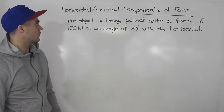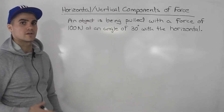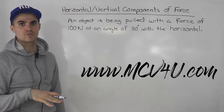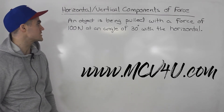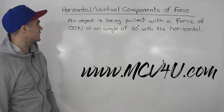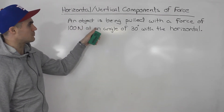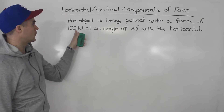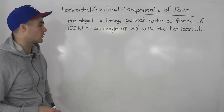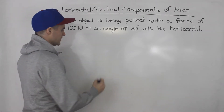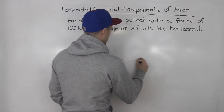Welcome back guys. In this video, we're going to talk about the horizontal and vertical components of force, or resolving force into its horizontal and vertical components. To start the video off, I want to go over a scenario. So let's say an object is being pulled with a force of 100 newtons at an angle of 30 degrees with the horizontal. If we draw a picture of this scenario, let's say that this is the ground here.